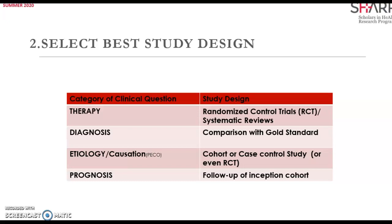Cohort studies and case-control studies best answer the etiology question. The cohort study is defined by populations followed to determine distinguishing subgroup characteristics. Researchers identify and compare two groups over time — one with a particular condition or treatment, and one without. The case-control study identifies patients who already have the outcome of interest and control patients without the outcome, and looks back to see if they had the exposure of interest or not.